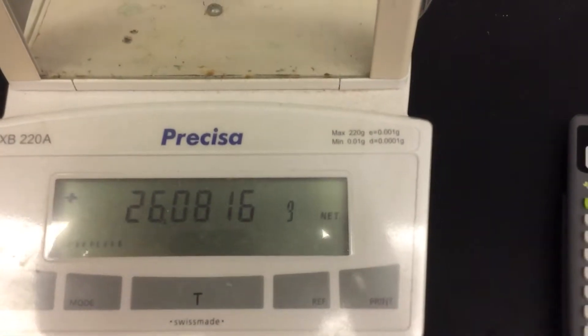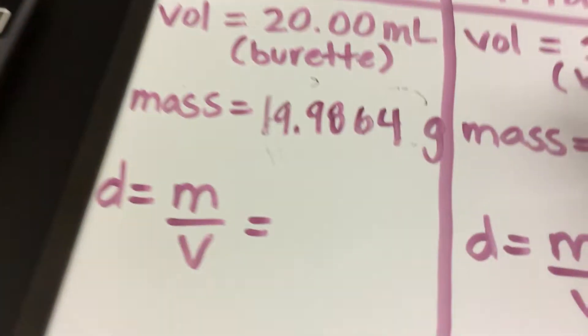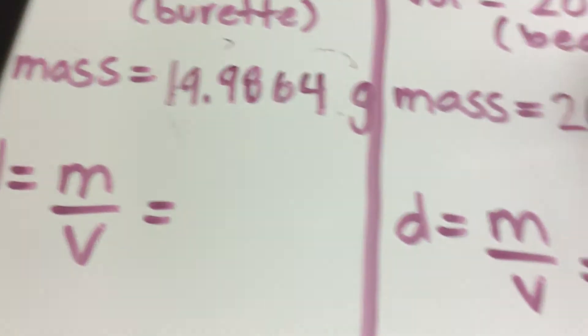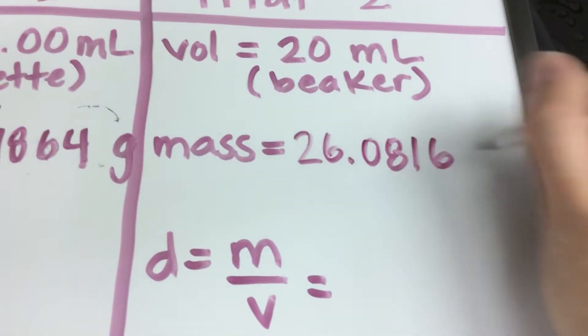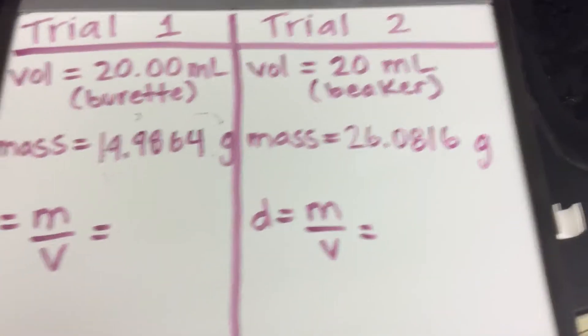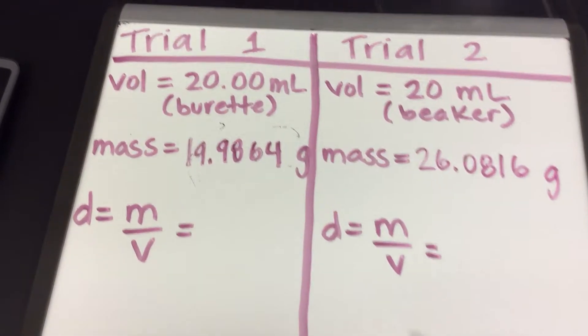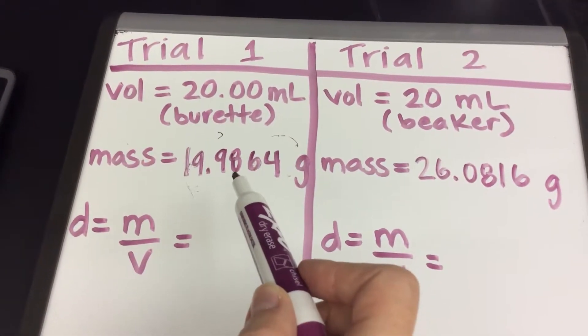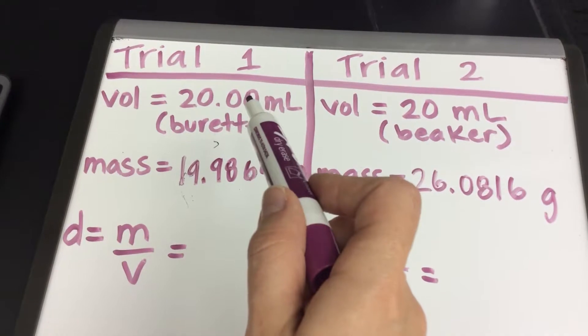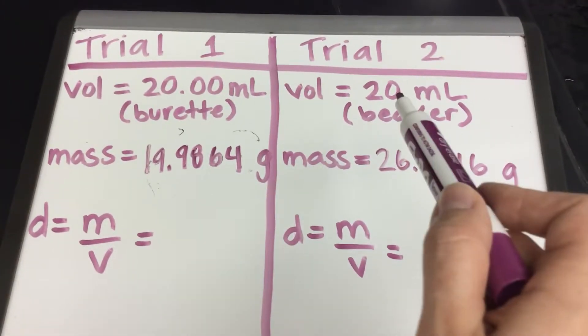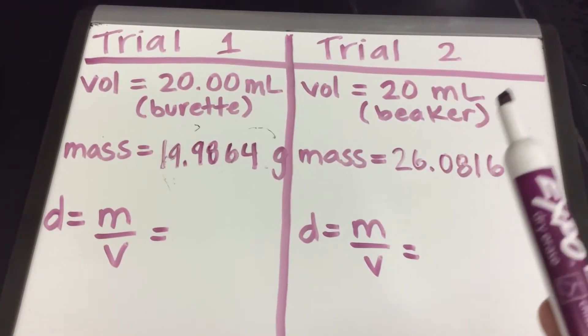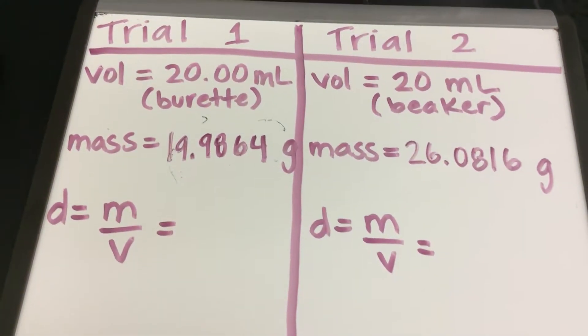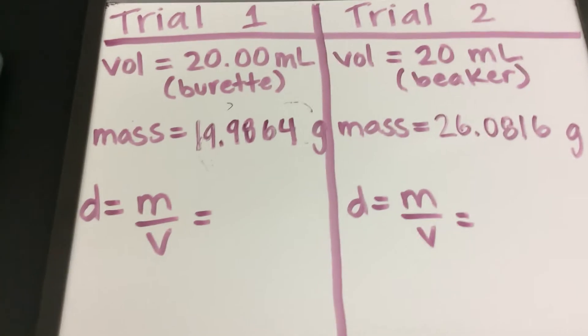26.0816. 26.0816 grams. Well, what do we see here? My mass, when I was using 20 milliliters from a burette versus 20 milliliters from a beaker, something's not right, right? Because 20 milliliters has a fixed mass. Let's see how that affects my density calculation.